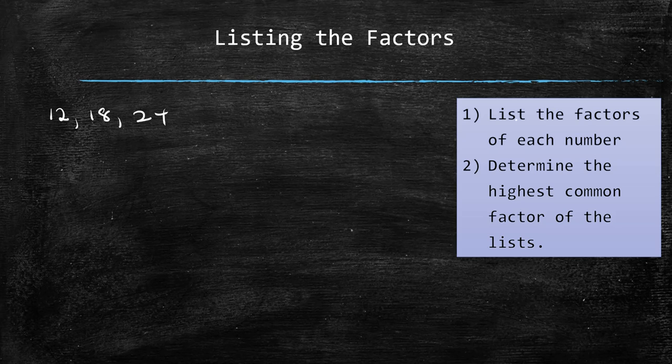As this method states, you list the factors of each number and determine the highest common factor of the list. For 12, we have the factors 1, 2, 3, 4, 6, and 12.